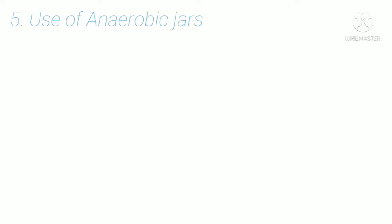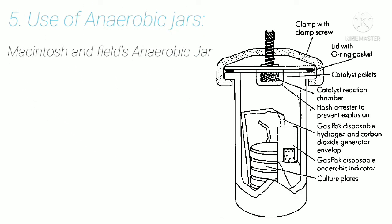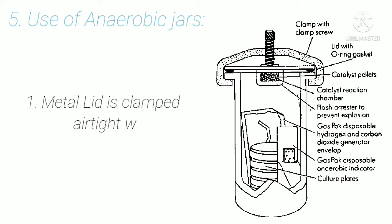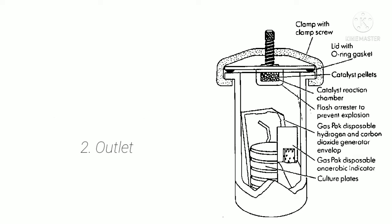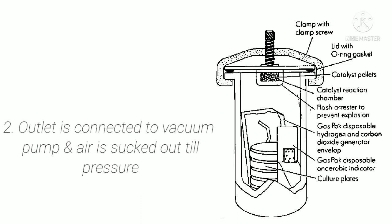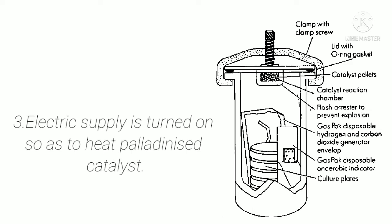The fifth method is the use of anaerobic jars. McIntosh and Fildes anaerobic jars are an example of jars used for the cultivation of anaerobic bacteria. The metal lid is clamped airtight with a screw. The outlet is connected to a vacuum pump and air is sucked out until the pressure drops to 100 mm of mercury.